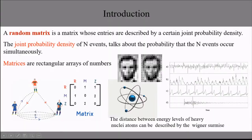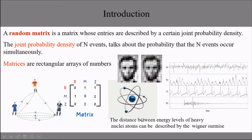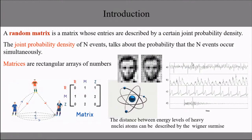In random matrices, Wigner discovered that the distance between energy levels of heavy nuclear atoms can be described by the Wigner surmise. Another case is when a matrix is built with time series — a kind of system of equations which depends on many variables.